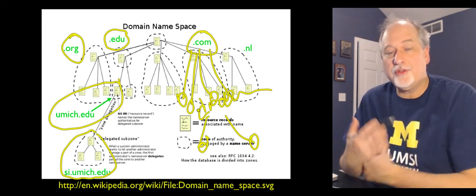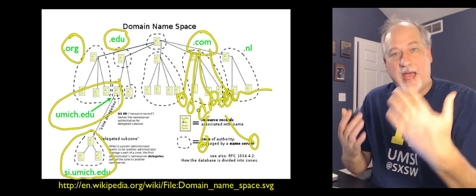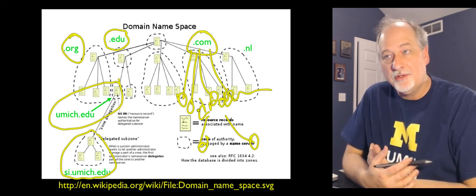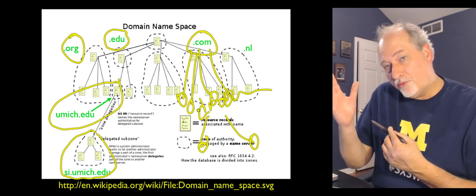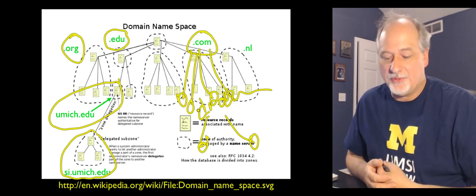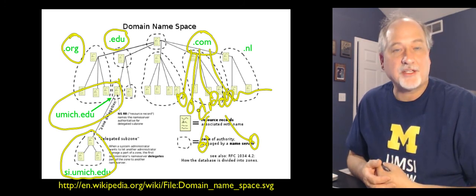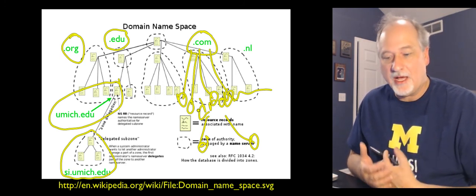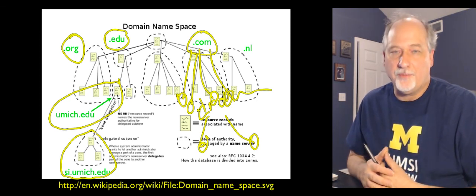So that's kind of how the domain name system works, right? It is this mapping between these names. There is this right-to-left ownership of these names, and you have to ask people to get those names. That's a real quick overview of the domain name system.